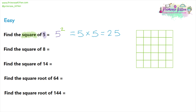Moving on to question two, we want to find the square of eight. That is eight to the power of two, which means eight multiplied by eight. If you think about your times tables, eight times eight is 64.